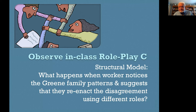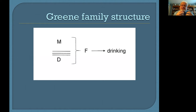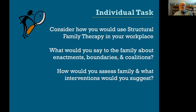We'll see what happens with that in the class role play. This structural mapping shows mom and daughter's coalition and close relationship, with father perhaps outside of that due to drinking. I want you to ask yourself how you would use structural family therapy in your workplace, how you would introduce a discussion about enactments, boundaries, and coalitions with the family you were working with, and how that would lead to interventions. We will talk about this in the context of the role plays with the Green family in class.